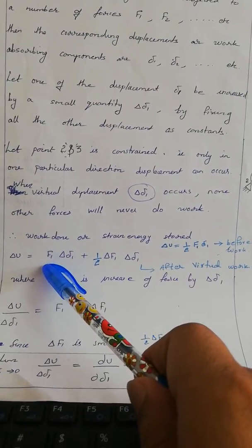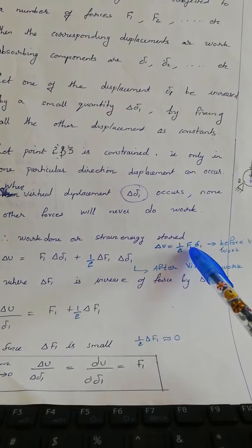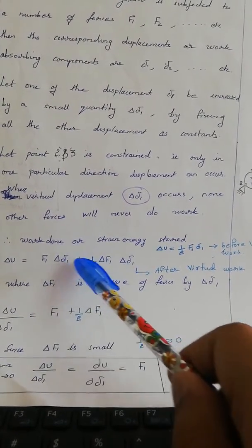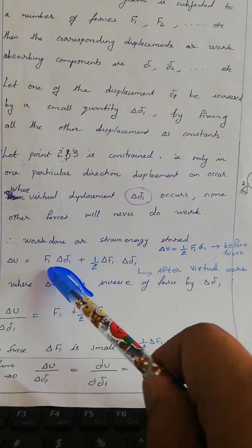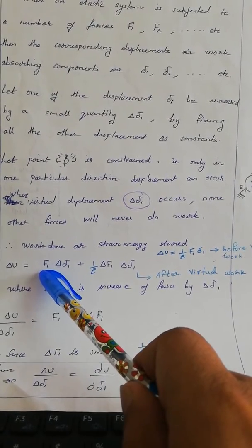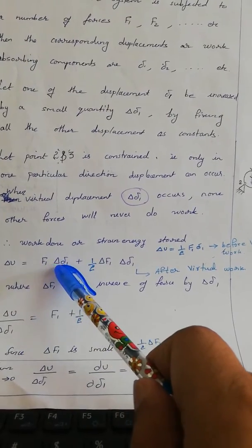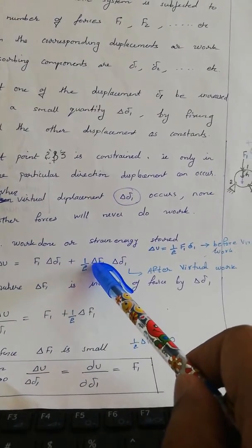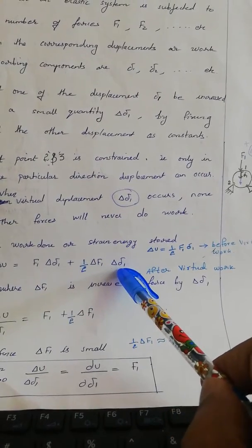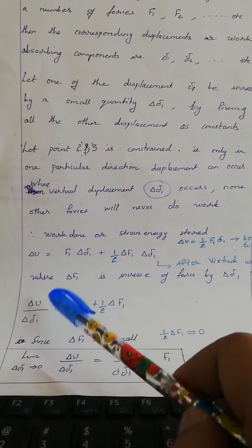The total strain energy stored in this case equals F1 times delta-delta-1. Initially it was ½ F1 · δ1, but now delta-1 has changed to delta-delta-1 and the half-force factor becomes full magnitude due to the virtual displacement. So: δU = F1 · δδ1 + ½ · δF1 · δδ1, which is the energy stored after the virtual work.